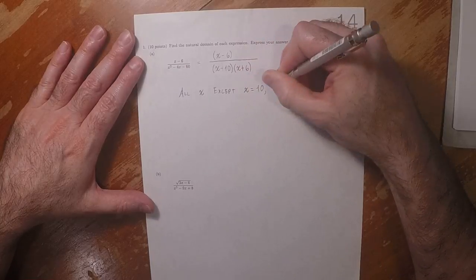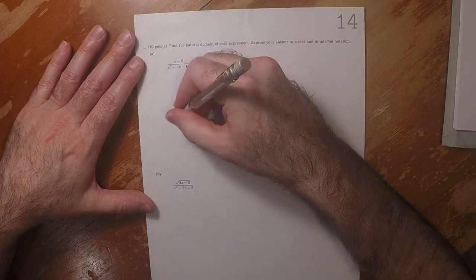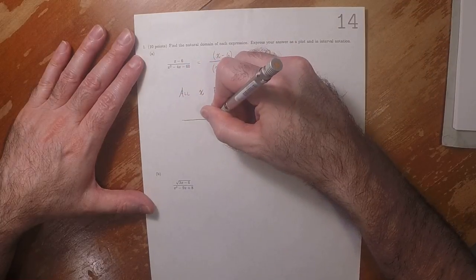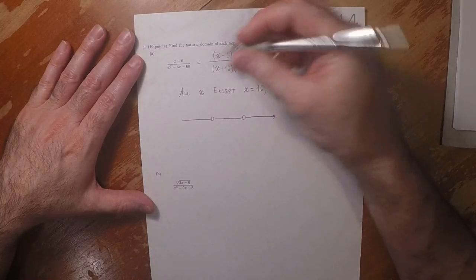x is 10 and x is negative 6. Drawn as a number line, that's the whole line less two points.